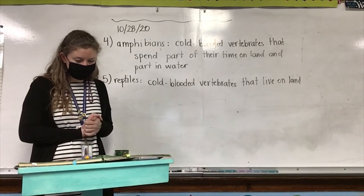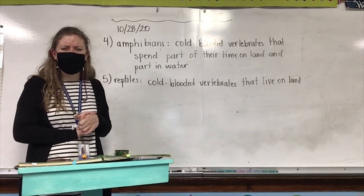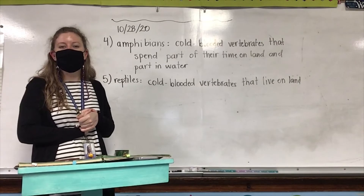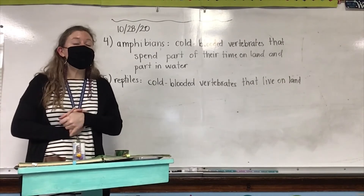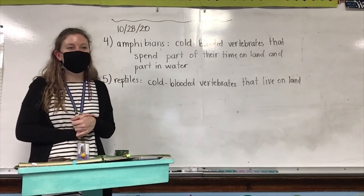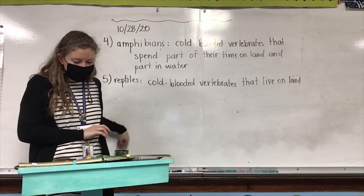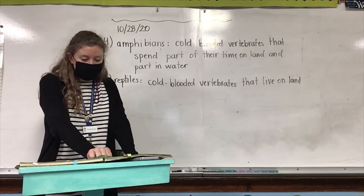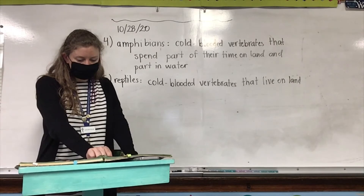Amphibians' skin has to be wet. Reptile skin is dry. Because they cannot breathe through their skin, reptiles use lungs. Their eggs are tough to keep moisture from escaping. Let's look at the diagram on the bottom of page 92 — it's titled 'Amphibians and Reptiles.' We have two animals: a frog and a lizard.